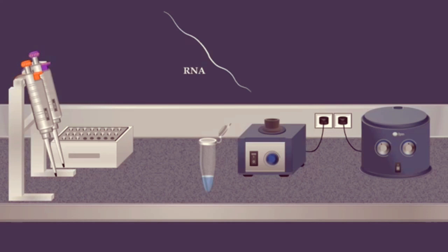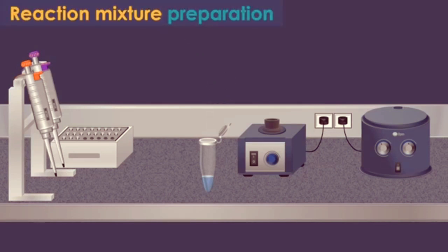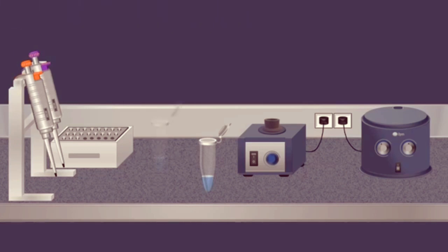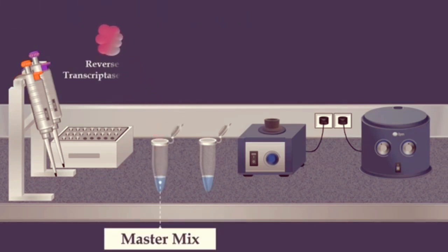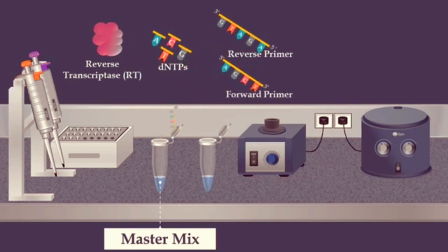After the extraction of the viral RNA, the next step is the preparation of the reaction mixture for PCR amplification. In this step, a master mix is used which is a pre-mixed concentrated solution that consists of buffer, reverse transcriptase enzyme, nucleotides, forward primer, reverse primer, Taqman probe, and DNA polymerase.